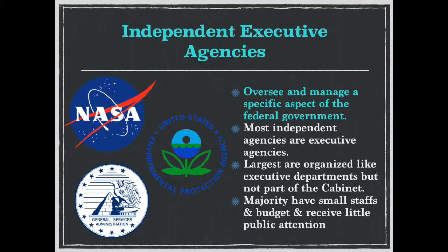Most agencies are independent executive agencies, which include most of the non-cabinet agencies. Some are huge, with thousands of employees, multi-million or even multi-billion dollar budgets, and extremely important public tasks to perform. The GSA, NASA, and the Environmental Protection Agency (EPA) are some of the largest major executive agencies. However, the majority have small staffs and budgets and receive very little public attention.